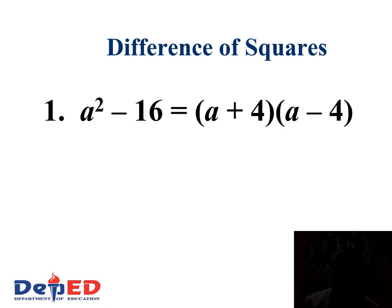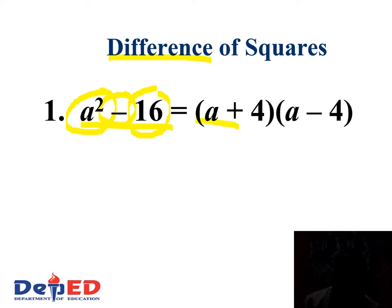So for example, we have a² minus 16. As you can see, a² is a perfect square and 16 is also a perfect square. And since this is a difference of two squares, there is a minus sign between the two terms. So the square root of a² is a, and the square root of 16 is 4. So we have positive 4 and negative 4. Therefore, the factors are (a + 4) and (a − 4).